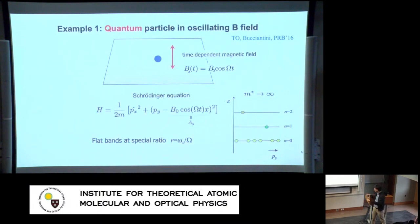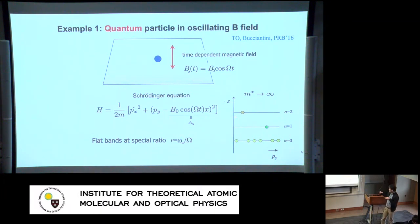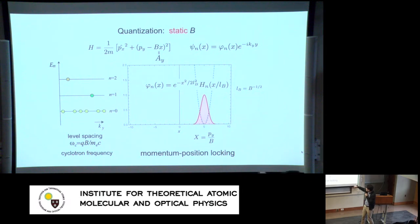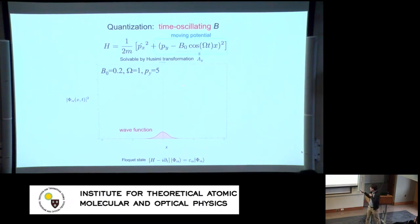Now let's extend this to a quantum system — starting from a very similar Hamiltonian but doing quantum mechanics. I'll show that with a very special magic ratio of the cyclotron frequency and the driving frequency omega, I will get very flat bands where the effective mass is infinite. One remark: there's a very important concept of momentum-position locking — the center position of the Landau level states is locked to the momentum in the y direction. We will see very similar things in the driven case.